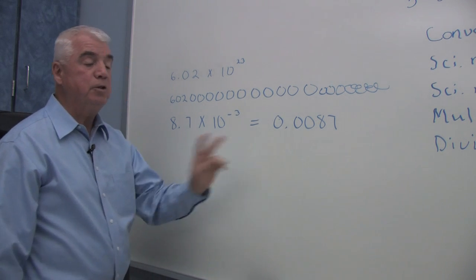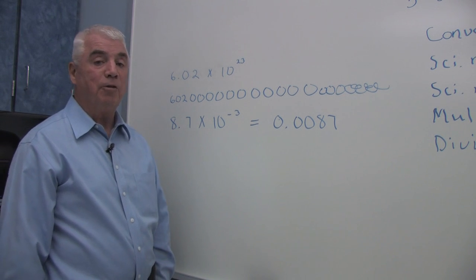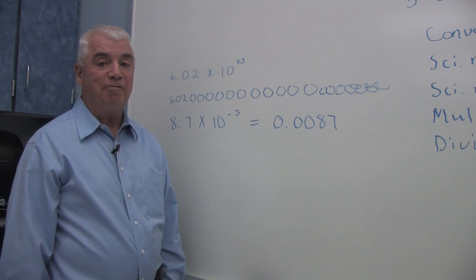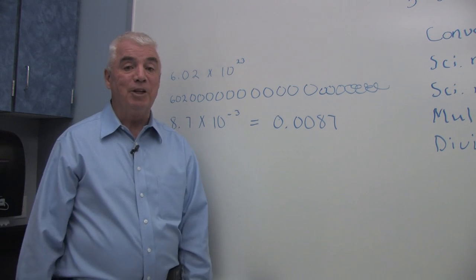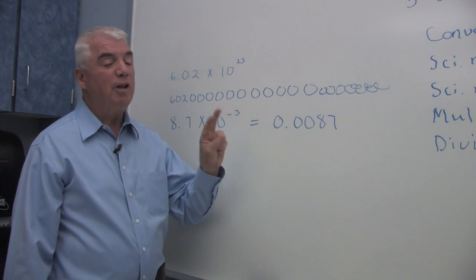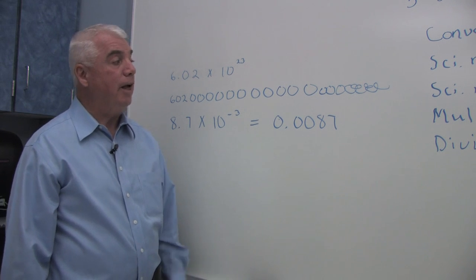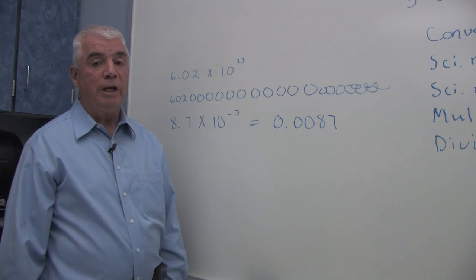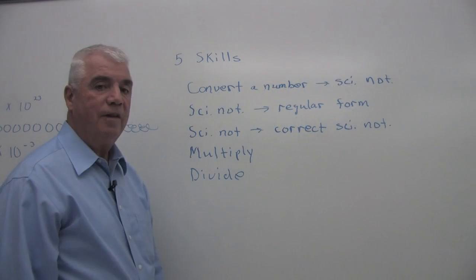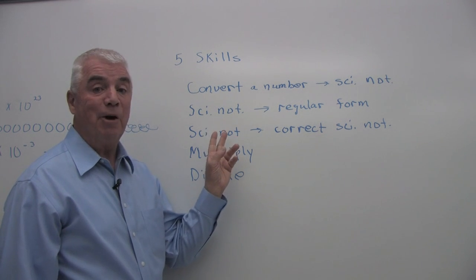Sometimes I use the term correct scientific notation. That simply means that the decimal is after the first digit. There are a number of skills associated with scientific notation, and if you were to make predictions about what would be on quizzes and exams, it's a good idea. You can make your own list of skills within a chapter — it's a great way of preparing for an exam.